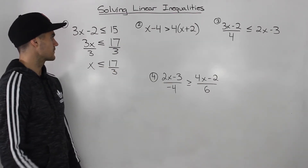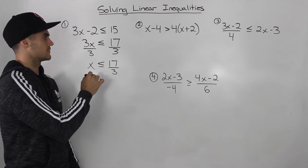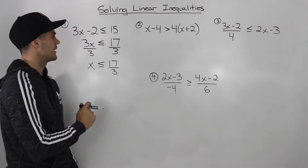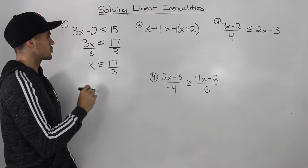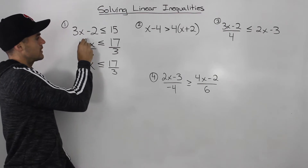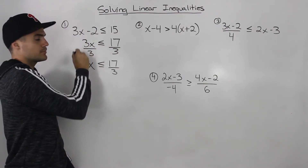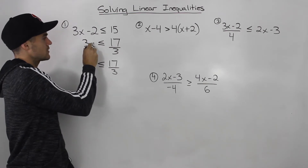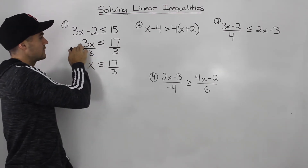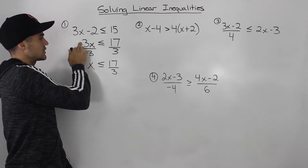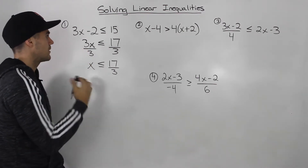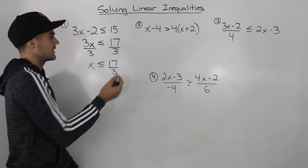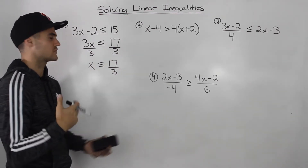Now a couple things I want to mention. This one was pretty simple, but they're going to get more complex. One thing you always want to try to do is make sure that when you simplify the expressions with a variable attached to them, that coefficient in front is going to be positive. Because if it's negative and then you divide both sides by a negative number, what's going to happen is you're going to have to flip the sign.